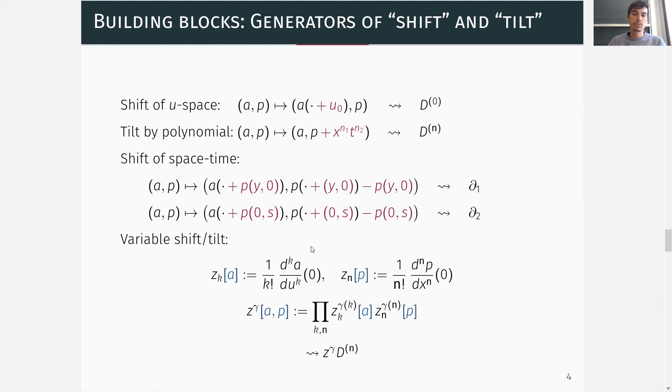We denote the k-th Taylor coefficient of A by ζ_k and the n-th Taylor coefficient of P by ζ_n. This naturally leads to consider monomials in the variables ζ_k and ζ_n, and they are best denoted with the help of multi-indices γ.